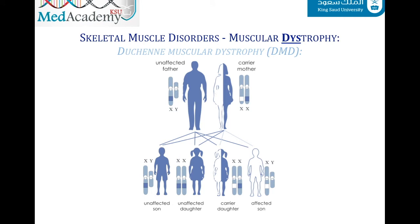Duchenne and Becker follow an X-linked recessive inheritance pattern, meaning the mutation is located on the X chromosome. This is why the disease almost exclusively affects males. Females are born with two X chromosomes, so if one carries the gene mutation, the body will generally activate the other normal X chromosome.